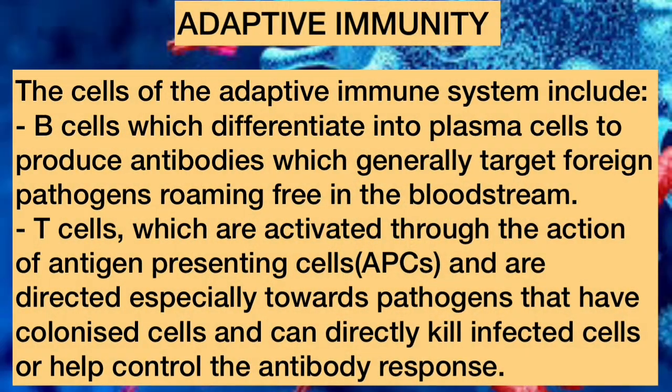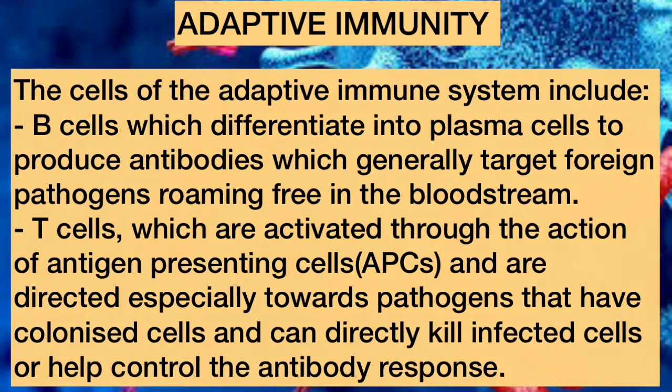The cells of the adaptive immune system include B cells, which differentiate into plasma cells to produce antibodies — which generally target foreign pathogens roaming free in the bloodstream — and T cells, which are activated through the action of antigen-presenting cells and are directed especially toward pathogens that have colonized cells, and can directly kill infected cells or help control the antibody response.